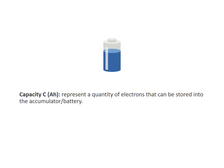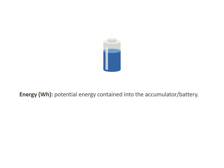The capacity of a battery is a concept representing the quantity of electrons that can be stored into the accumulator — you can see it like the quantity of water that can be stored into your bath. The energy is the potential energy contained into the accumulator, and this value is extremely important when you need to estimate the runtime of your application.